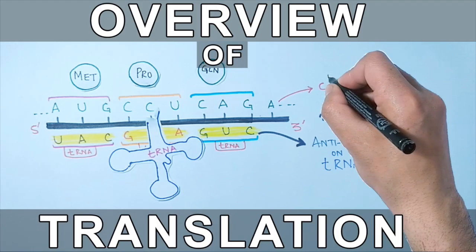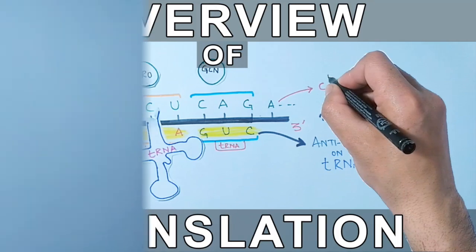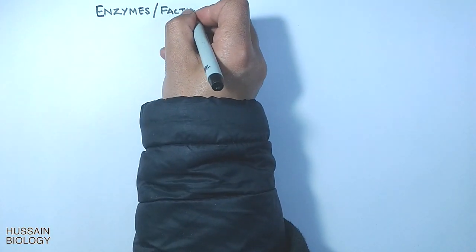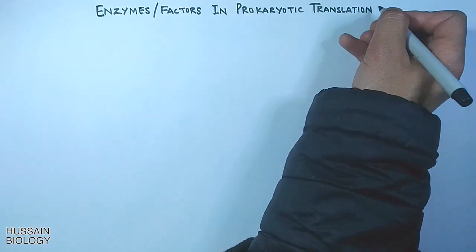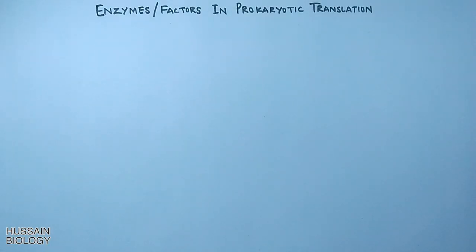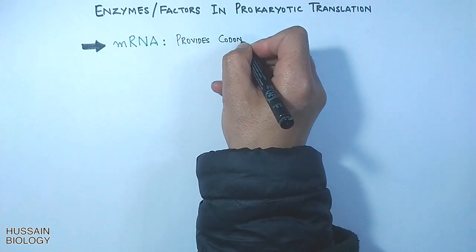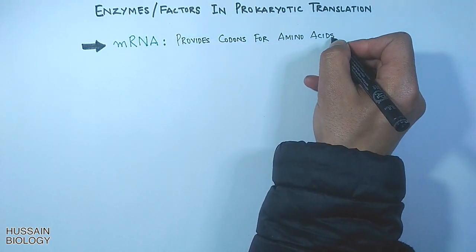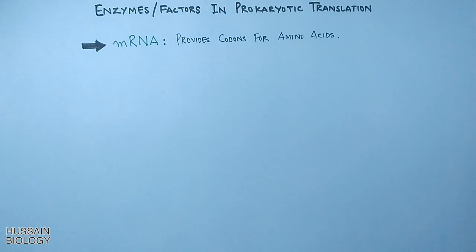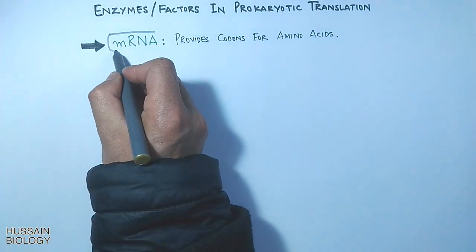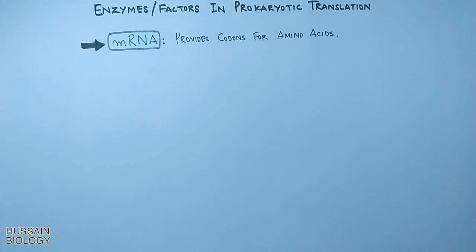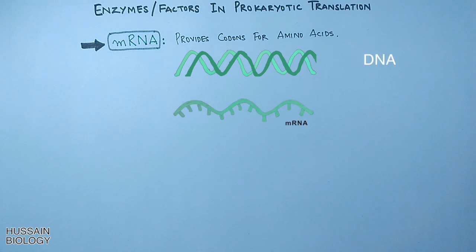In the previous video we discussed the overview of translation. Now in this video we will be discussing the enzymes or factors in prokaryotic translation. The first important molecule is the mRNA molecule — the messenger RNA. This messenger RNA provides the codons for amino acids to be incorporated into the chain, as it brings message or information from the DNA molecule during the process of transcription.